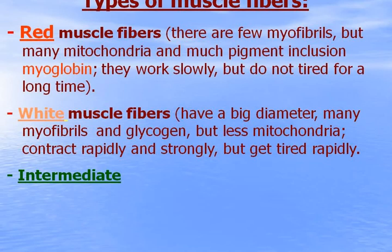White muscle fibers have a big diameter, many myofibrils, and glycogen, but fewer mitochondria and less myoglobin. They contract rapidly and strongly, but get tired rapidly.